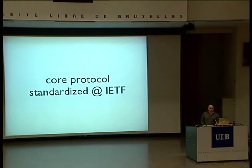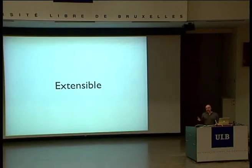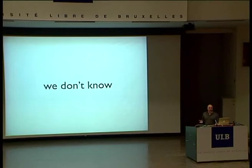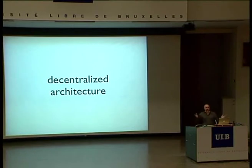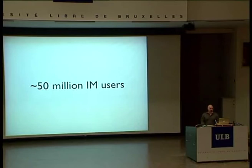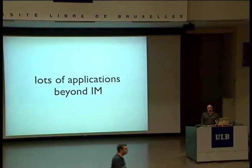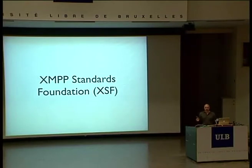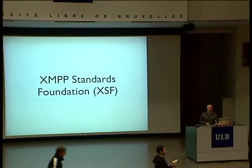Our core protocol has been standardized through the IETF. We're working through final standardization with the Internet Engineering Task Force. When we took it there, we didn't call it Jabber. We called it the Extensible Messaging and Presence Protocol, or XMPP, because you need a four-letter acronym for all good protocols. That's defined in RFCs 3920 and 3921. We estimate there's about 50 million users, because it's a decentralized architecture. We define extensions in the XMPP Standards Foundation, which we formerly called the Jabber Software Foundation, but we never did any software, so we changed the name.